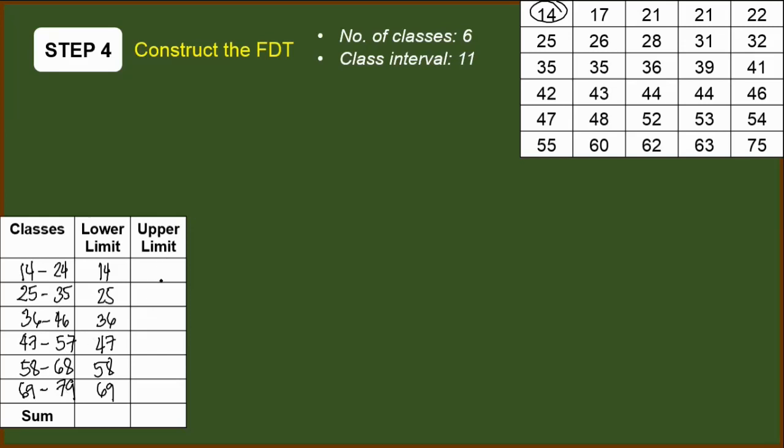And finally, 68 plus 11, we have 79. These numbers on the right side of the classes are what we will refer to as the upper limits. So we will write them here too. This is 24, 35, 46, 57, 68, and 79.